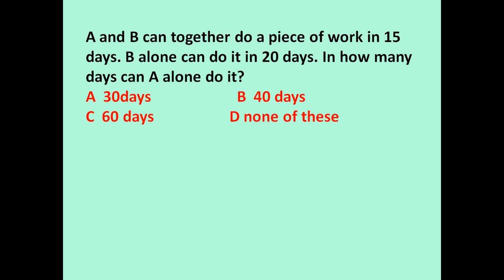The given problem is: A and B can together do a piece of work in 15 days. B alone can do it in 20 days. In how many days can A alone do it? If A and B work together, they take 15 days. If only B does the work, he takes 20 days. If A wants to complete the work alone, how many days will he take?